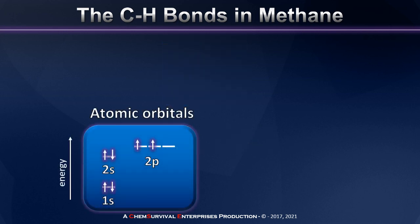Consider the atomic orbitals of a carbon atom, plotted on an energy diagram. I have my 1s², 2s², 2p² ground state configuration for carbon. Now imagine I'm ready to make some bonds to four hydrogens. I'll need to promote one of my 2s electrons up to the p-subshell in order to get everything ready. Now my carbon atom is ready to create four bonds.